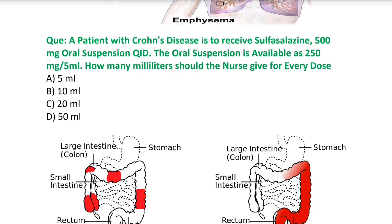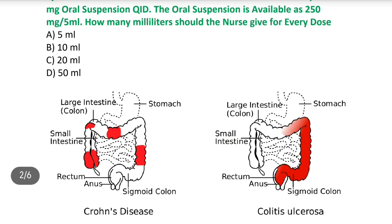Next question: A patient with Crohn's disease is to receive sulfasalazine 500 mg oral suspension QID. The oral suspension is available as 250 mg per 5 ml. How many ml should the nurse give for every dose? A) 5 ml, B) 10 ml, C) 20 ml, D) 50 ml. Answer is 10 ml. Crohn's disease एक chronic inflammatory bowel disease है जो digestive system की lining को affect करती है, आँतों में सूजन आ जाती है. यह ulcerative colitis जैसी होती है लेकिन ulcerative colitis only colon को affect करती है, जबकि Crohn's disease small intestine के last part ileum और beginning part of colon को affect करती है.